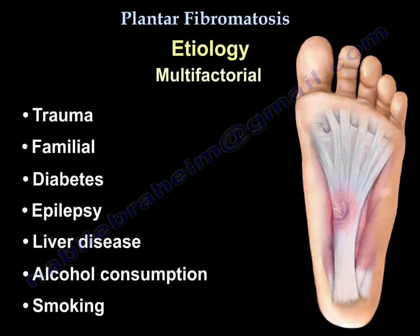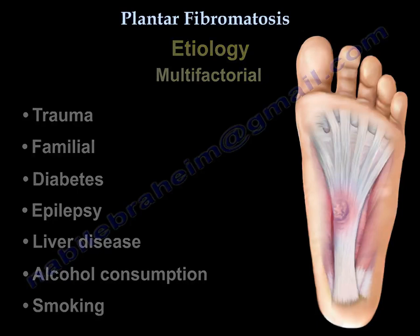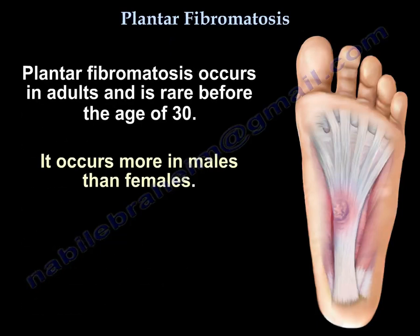The etiology is multifactorial — trauma, familial predisposition, diabetes, epilepsy, liver disease, alcohol consumption, and smoking can all be contributing factors. Plantar fibromatosis occurs in adults and is rare before age 30, occurring more in males than females.